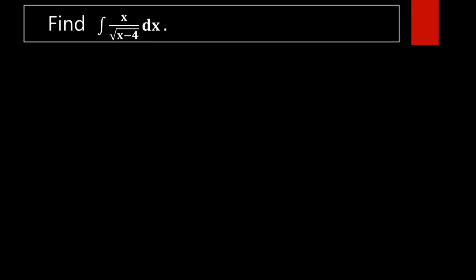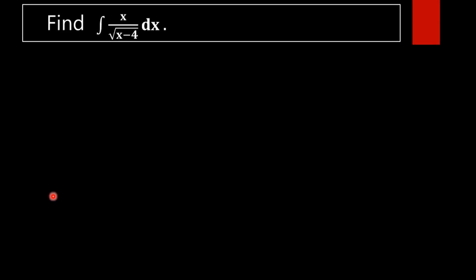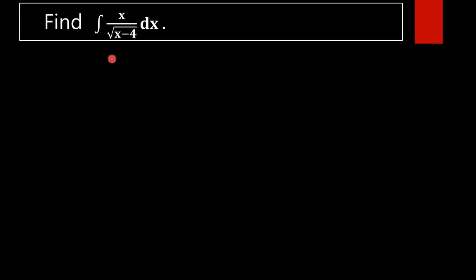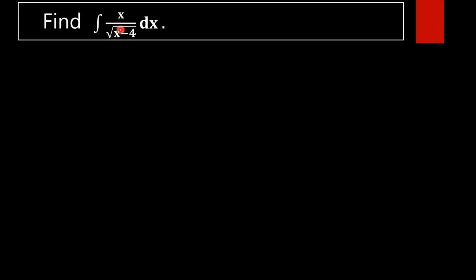Here we have to find the value of this integral, that is, integral of x by square root of x minus 4 dx. This function is not in an integrable form. What is the problem here?